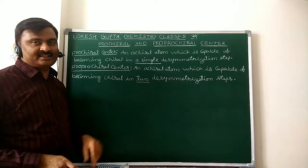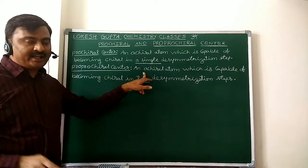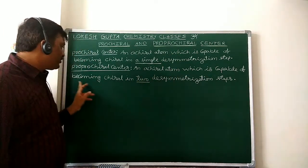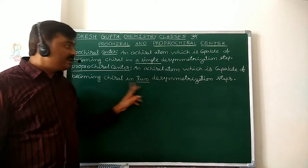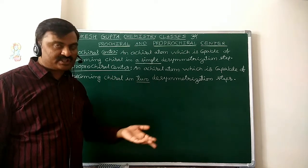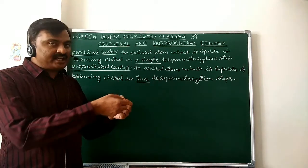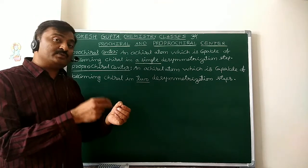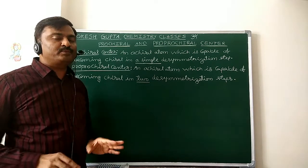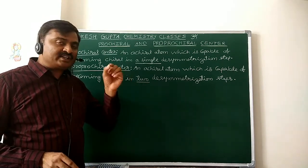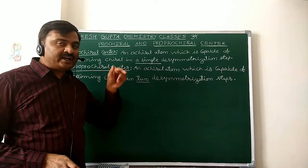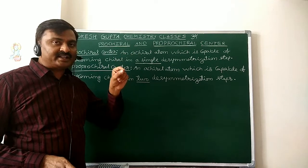Pro Chiral Center: an achiral atom which is capable of becoming chiral in two desymmetrization steps — means in two substitution steps. In simple language, if an atom is attached to four atoms, out of four, two are different and the remaining two are identical.